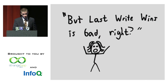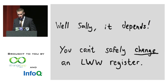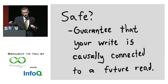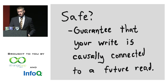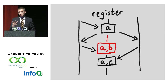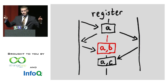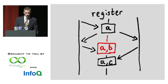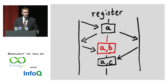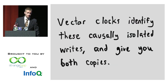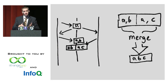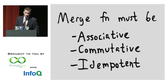You can't safely change a last-write-wins register if you want to guarantee your write is causally connected to a future state. In a last-write-wins system, if you're adding A, B, and C to a set — two nodes concurrently read A, one writes {A,B} and another writes {A,C} — last-write-wins picks one and the other disappears as if it never happened. Vector clocks allow you to identify causal isolation and give you both copies back — {A,B} and {A,C} — and it's your responsibility to merge them into {A,B,C}. That merge function must be associative, commutative, and idempotent — giving you a semi-lattice called a convergent replicated data type (CRDT).